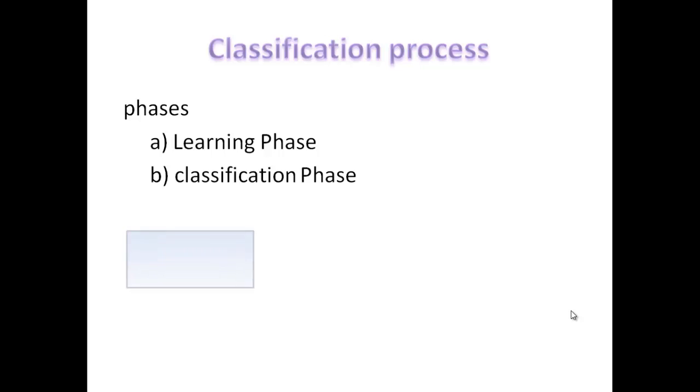The classification process involves two phases: learning phase and classification phase. In the learning phase, training data are analyzed by a classification algorithm. Test data is used to estimate the accuracy of classification rules.